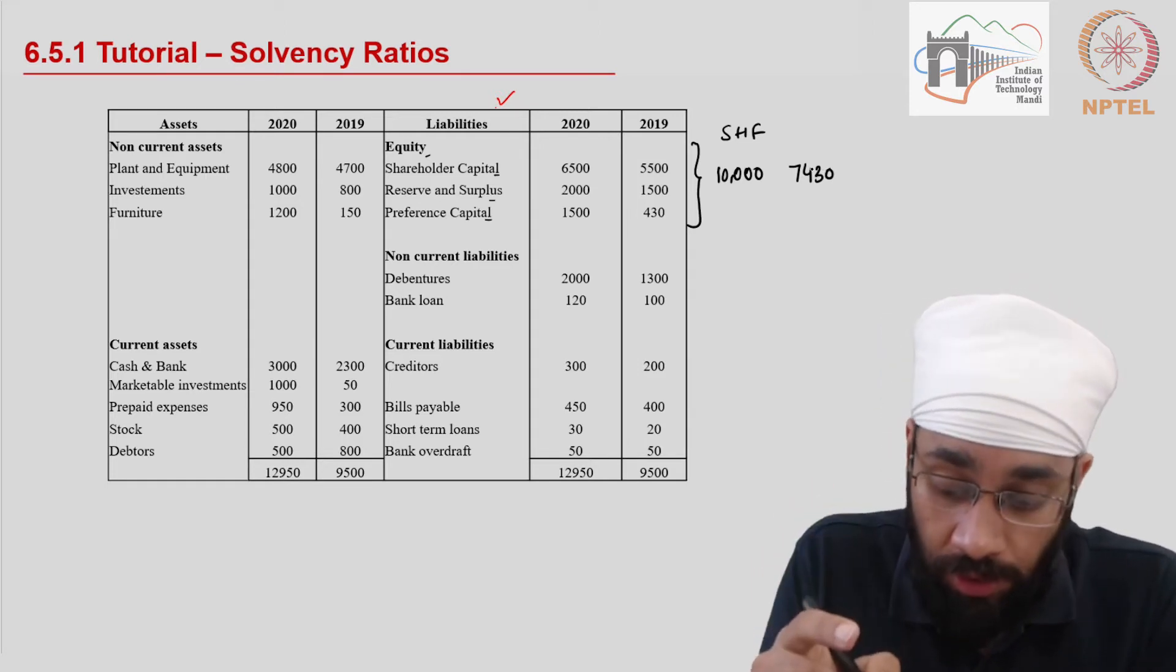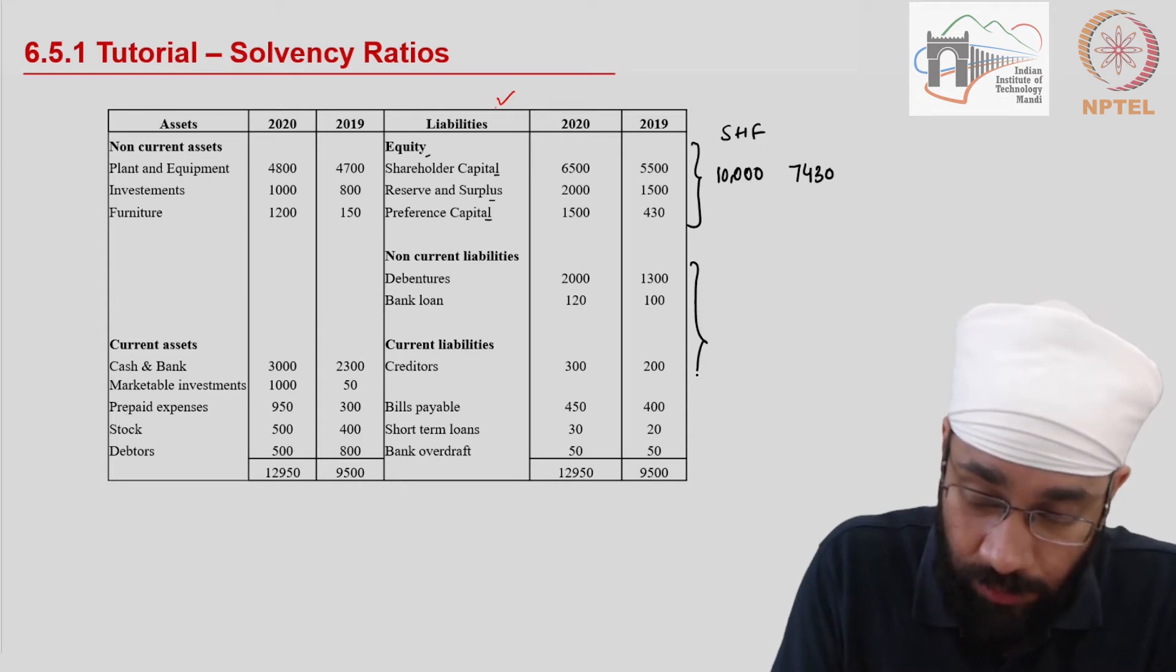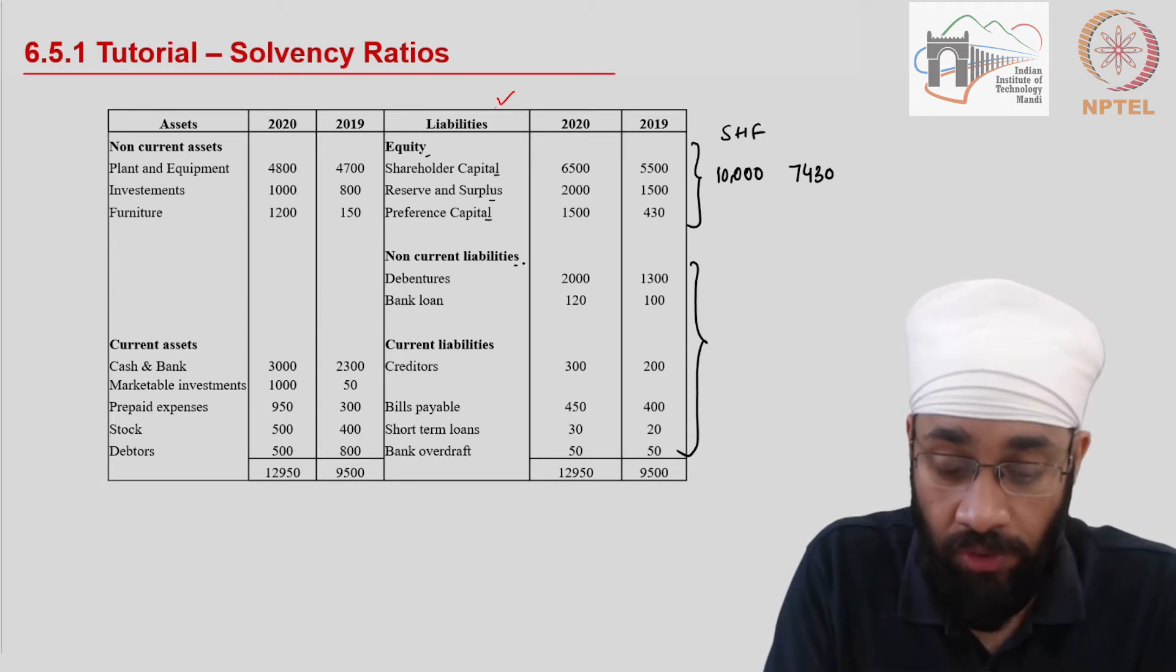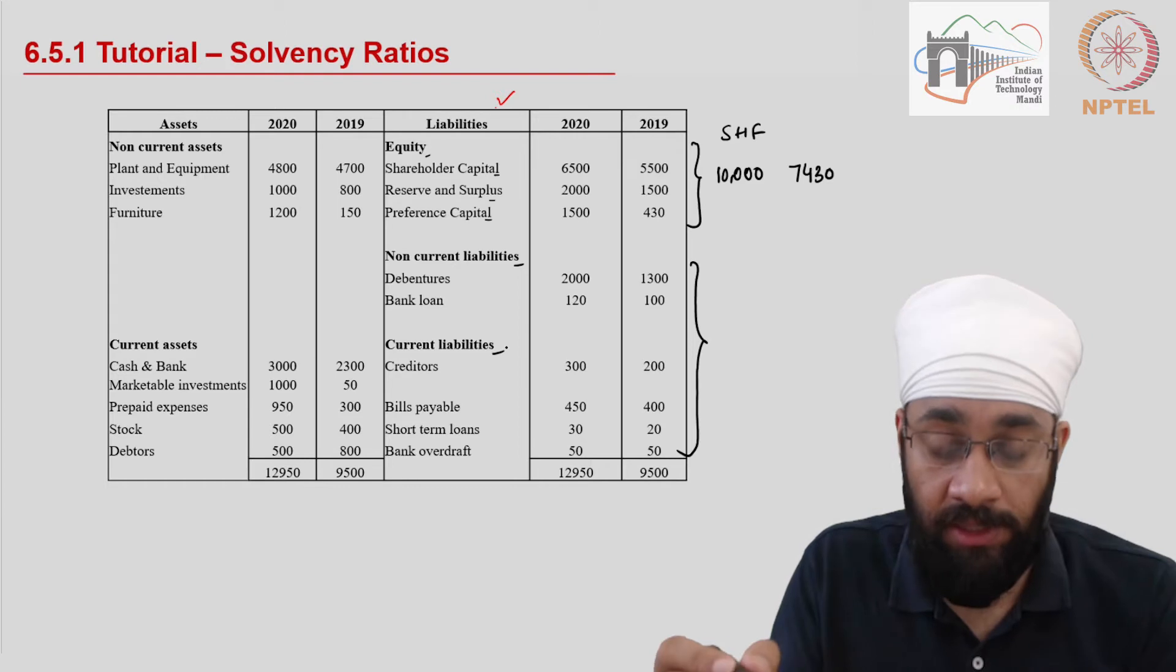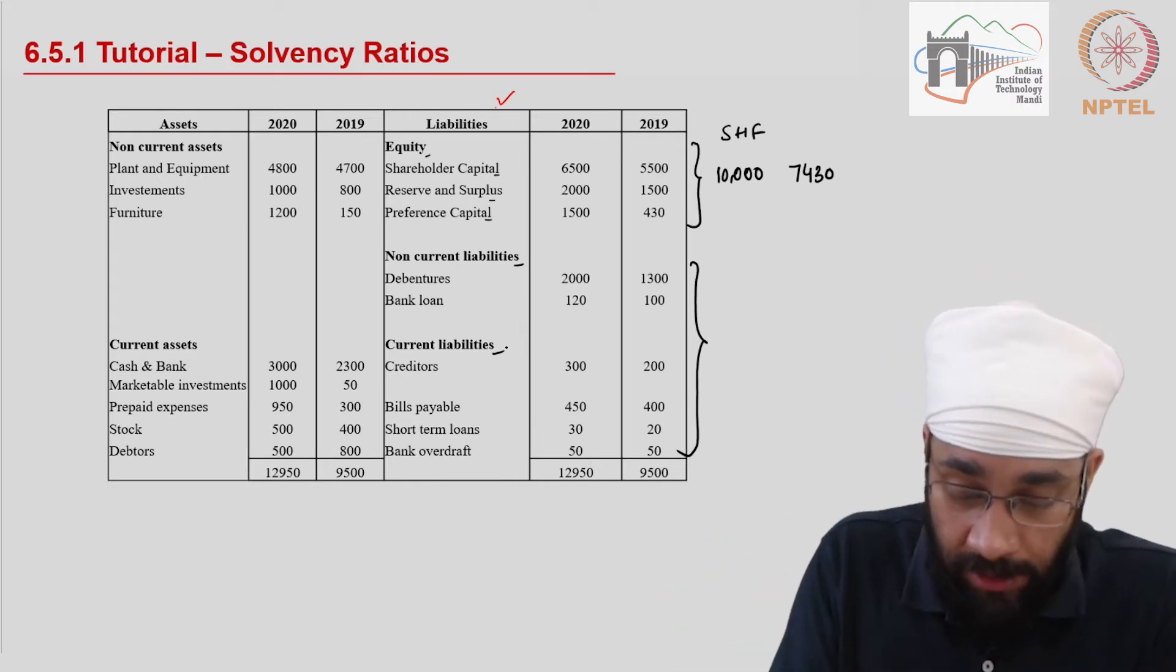We also need the external liabilities which is going to be this section: non-current liabilities plus current liabilities.